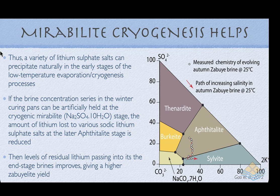The natural path of increasing salinity in those zabuyelite brine pans moves from epithetylite into sylvite, with lithium carbonate precipitating in the intermediate stage. The goal is to keep more of the precipitation in the sylvite (KCl) field rather than the epithetylite field to maximize lithium carbonate yield.